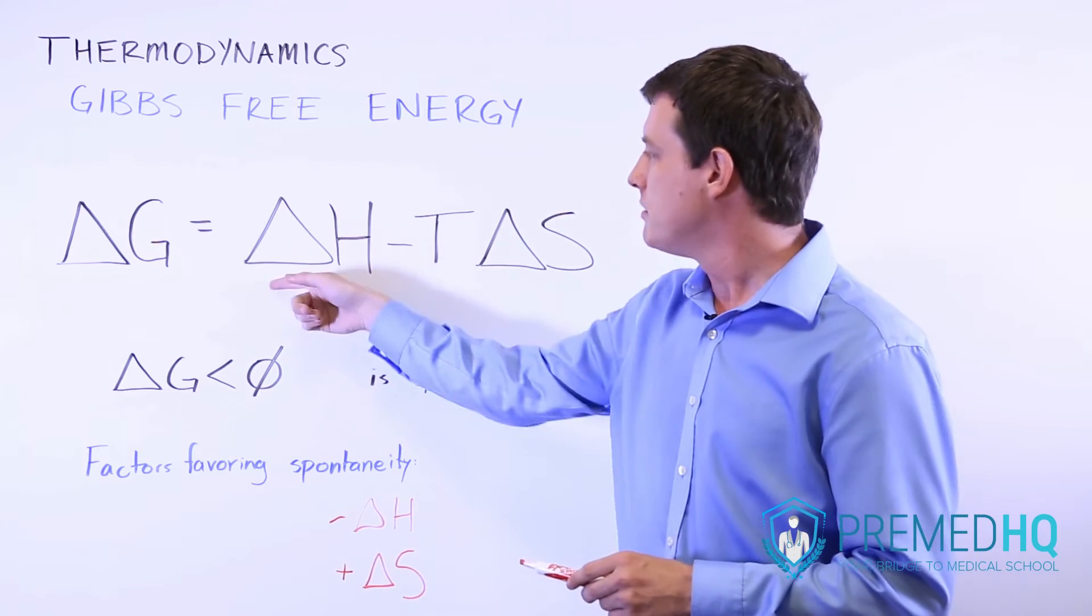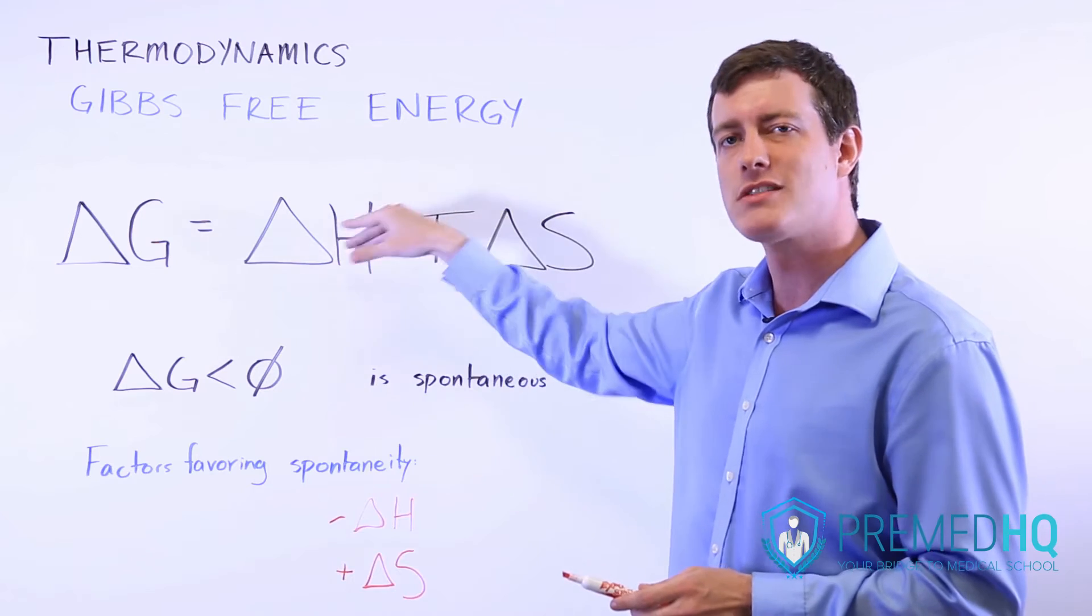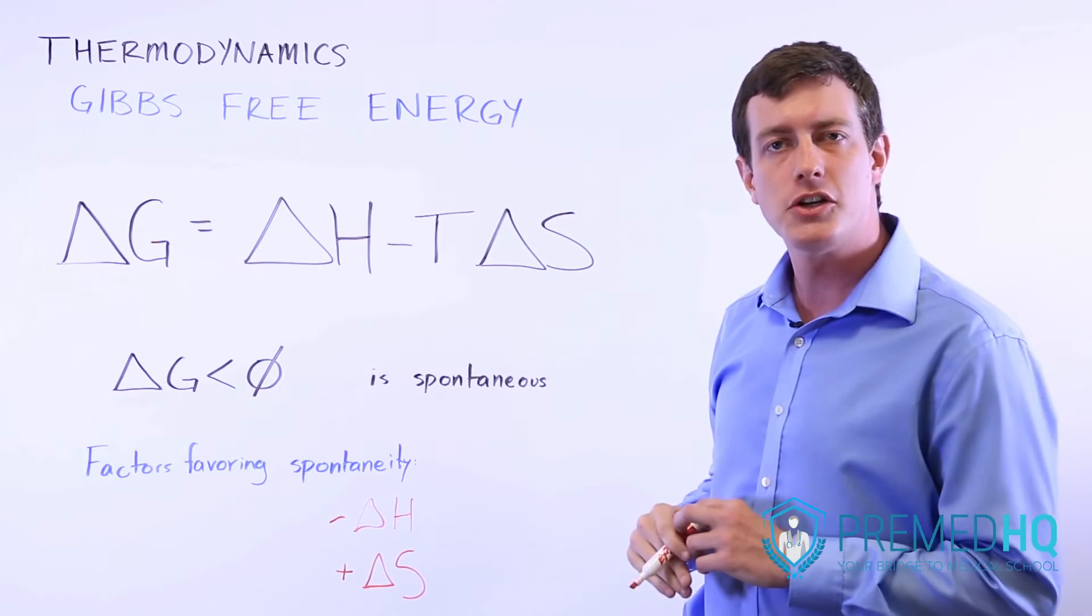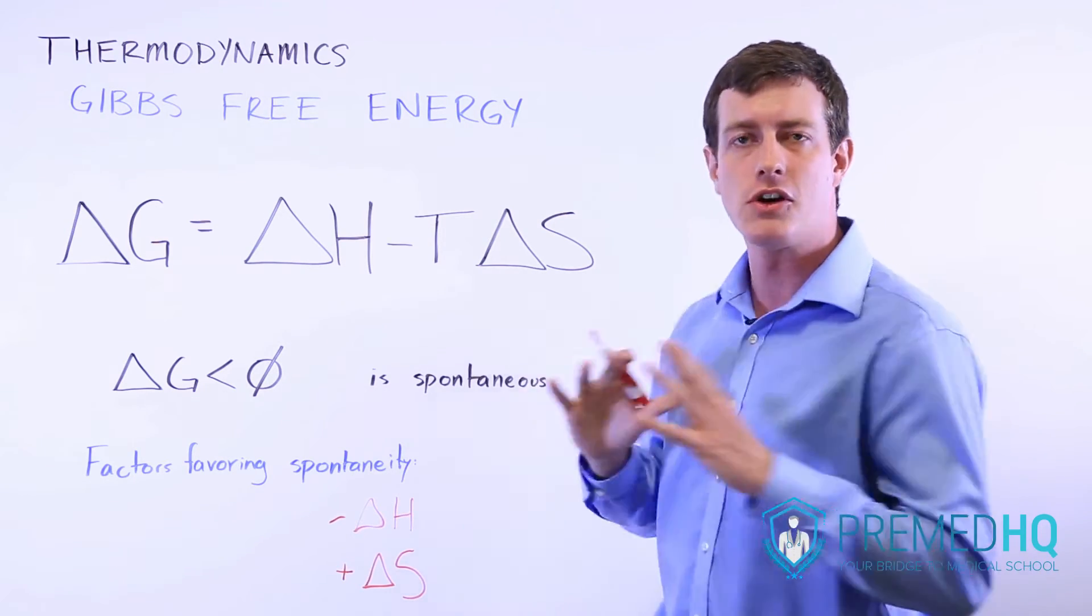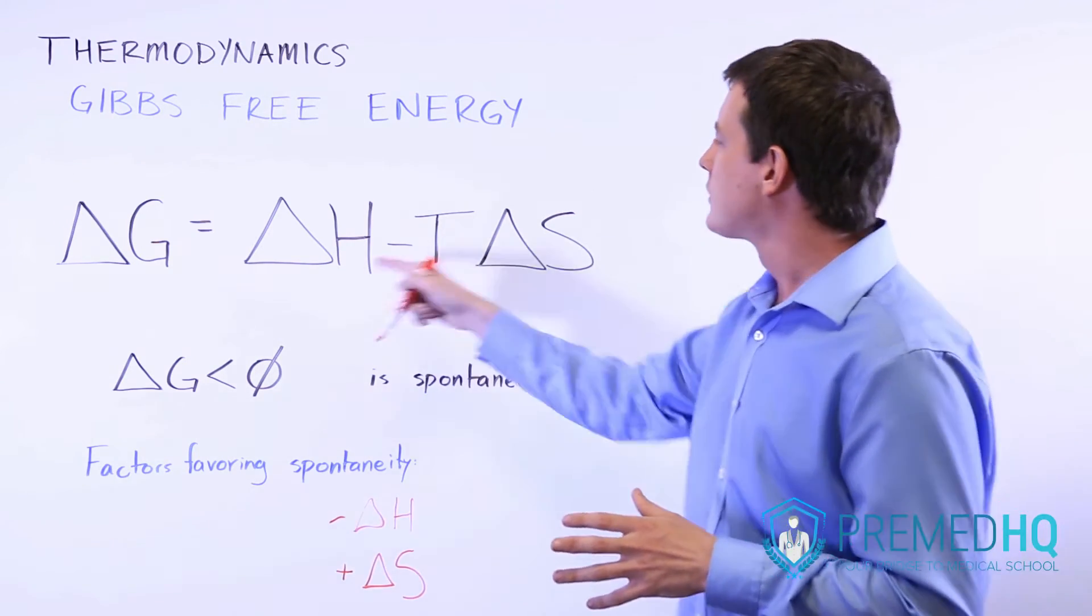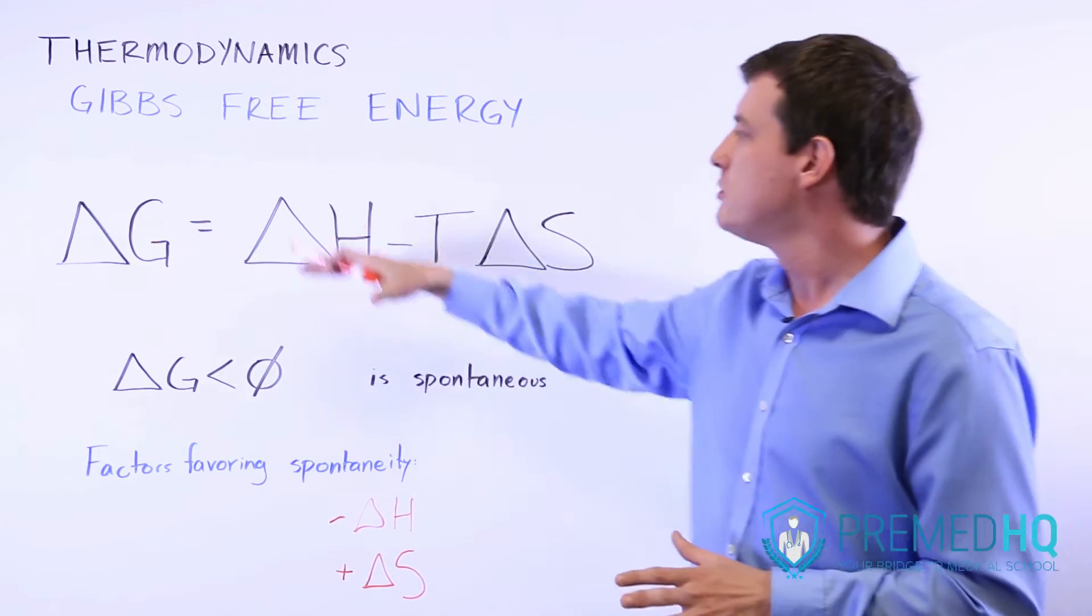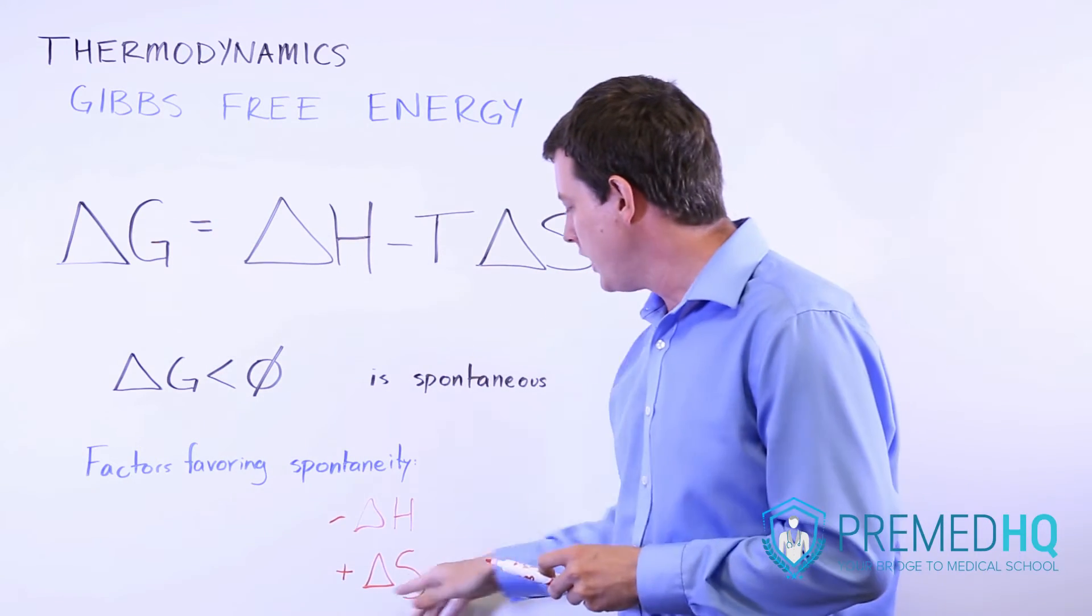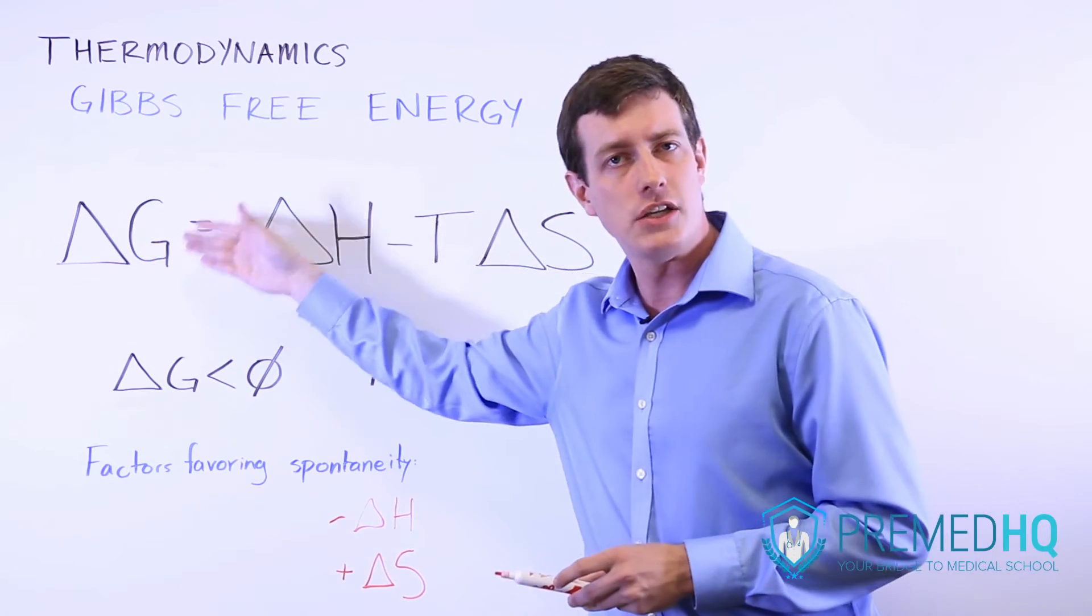Notice that if this term is very negative and this term is a little bit positive, it's okay. You can have an endothermic reaction, one with a positive delta H, that ends up having a negative change in Gibbs free energy and is thus spontaneous. So it's not that all endothermic reactions are not spontaneous and that all exothermic reactions are. It's that exothermicity, a negative delta H, encourages or favors the Gibbs free energy to be negative. And similarly, a positive change in entropy is something that encourages or favors a negative change in the Gibbs free energy.